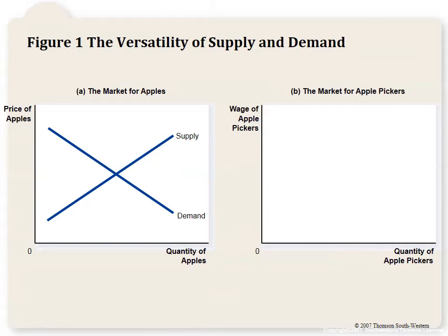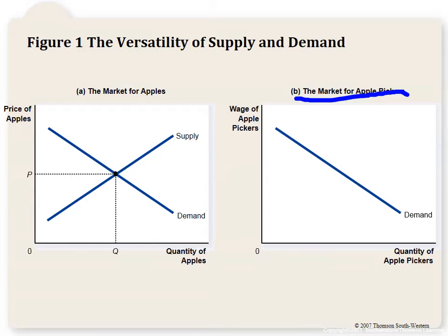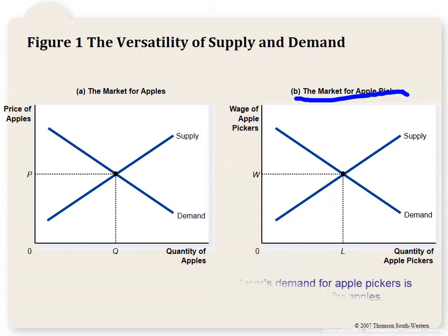A great way to think about this is the supply and demand for apples. On the left we have the market for apples, which sets the price and quantity of apples demanded. The demand for apple pickers comes from the demand for apples — the downward sloping demand for apple pickers comes from consumers demanding apples. Just like any other market, factors of production are governed by supply and demand, creating a wage (w) and a quantity of labor employed.